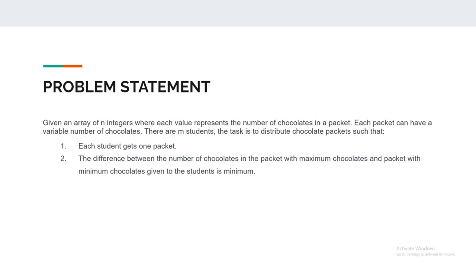Suppose we are giving packets to m students. Each student will open their packet and find out the number of chocolates present. Out of those students, one will get the minimum number of chocolates and another will get the maximum number of chocolates. We need to minimize this difference — maximum chocolates minus minimum chocolates.